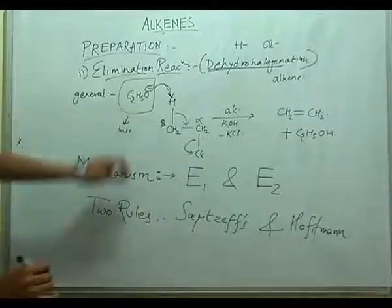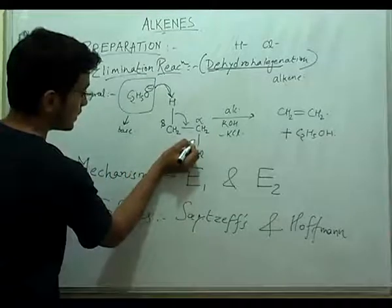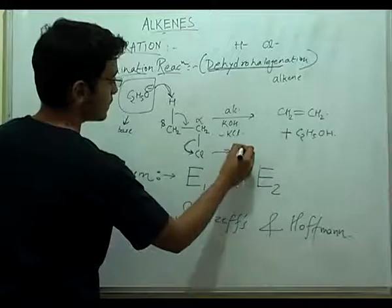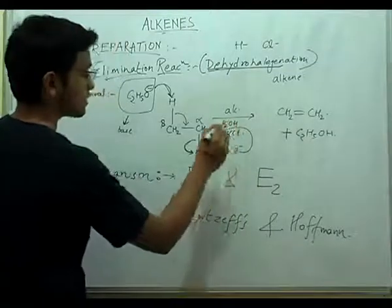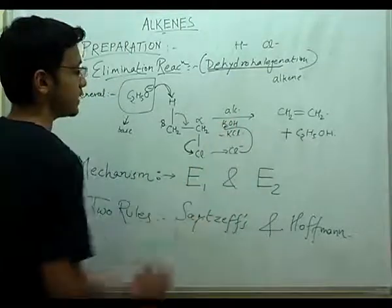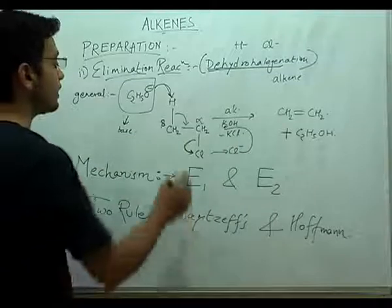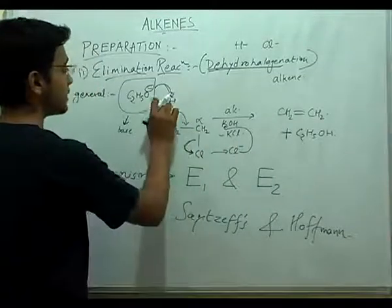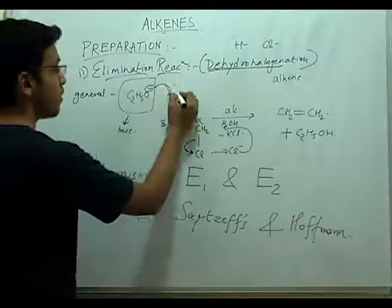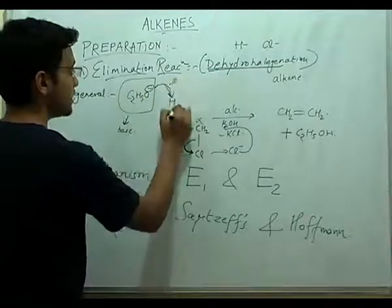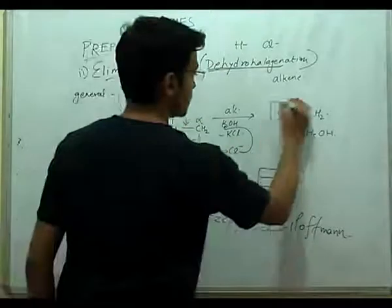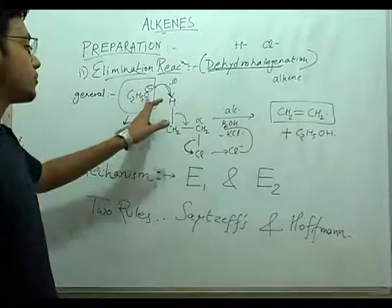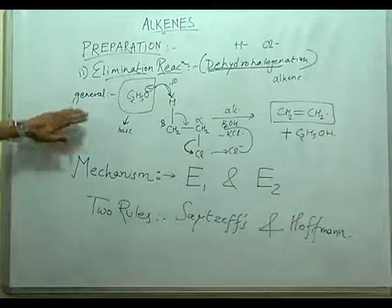For example, taking C2H5O⁻ as the base, it extracts a proton from the beta carbon. The C–Cl bond breaks: Cl leaves as Cl⁻ and combines with K⁺ to form KCl as a side product. The electrons transfer to form the double bond: CH2=CH2, and C2H5OH is formed as a side product.